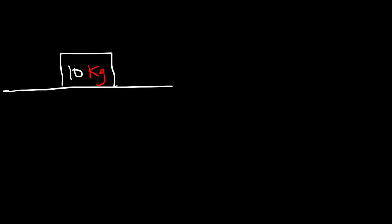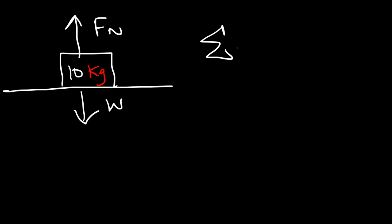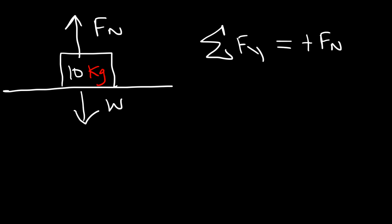The first thing you want to do is identify all the forces in the y direction. We have a downward weight force and an upward normal force — that's all the forces in this example. We want to set up an expression for the net force of the object in the y direction. There are no forces in the x direction, so we don't have to worry about it. The normal force is in the positive y direction, so we write positive Fn. The weight force is in the negative y direction, so we write negative W.